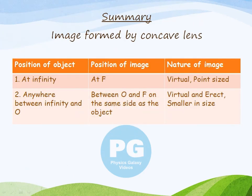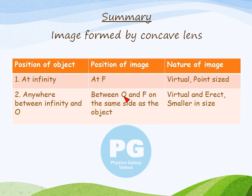Here we see the summary of image formed by concave lens. When the object is at infinity, the image is formed at focus, which is virtual and point-sized. When the object is placed anywhere between infinity and optical center, the image is formed between optical center and focus, on the same side as the object, and the image is virtual, erect, and smaller in size.